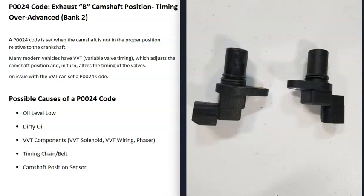What does this mean? Basically, there are camshaft position sensors that track the camshaft as it spins and report this information back to the computer, which uses it for timing. When you get a P0024 code, one of these sensors — mainly on bank 2 — is reporting to the computer that there's an issue with the timing: that it's off, that it's over-advanced.